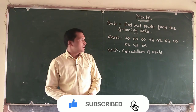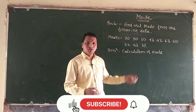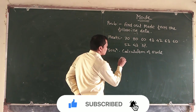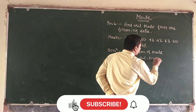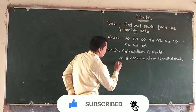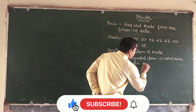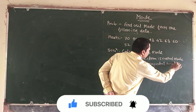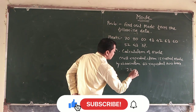Each value appears one time, and the value 60 appears two times. Calculation of mode: the most repeated element is called the mode. Therefore, by observation, 60 is repeated two times. So, mode is equal to 60.